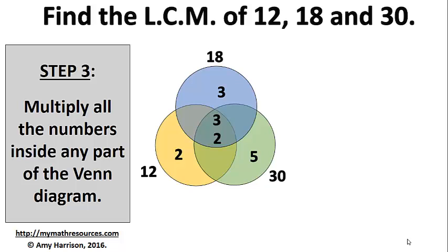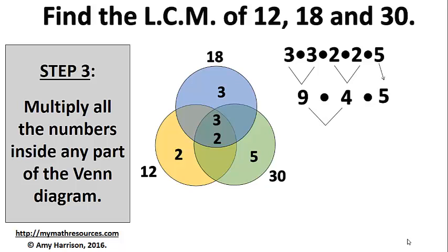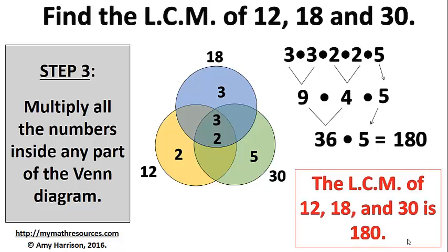So we can take 3 times 3 times 2 times 2 times 5. 3 times 3 is 9. 2 times 2 is 4. We bring down the 5. 9 times 4 is 36. And 36 times 5 is 180. So the least common multiple of 12, 18, and 30 is 180.